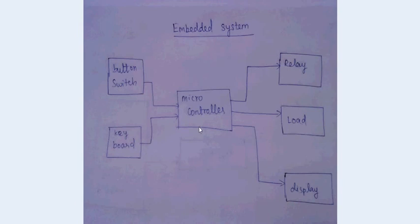For example, in a washing machine, washing machine has a motor. It's a hardware system. So to control that motor we can use microcontroller chip.